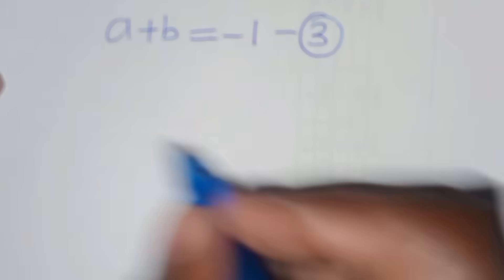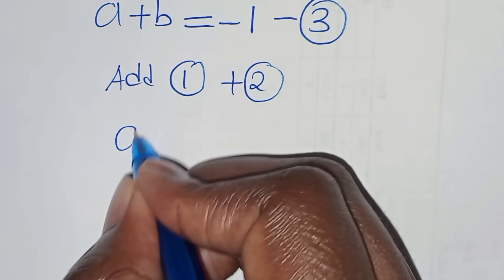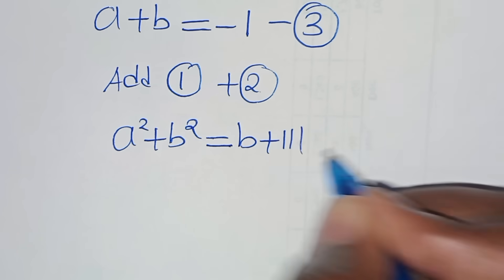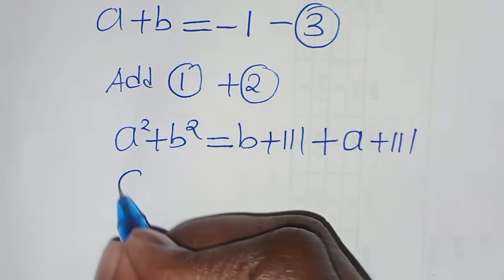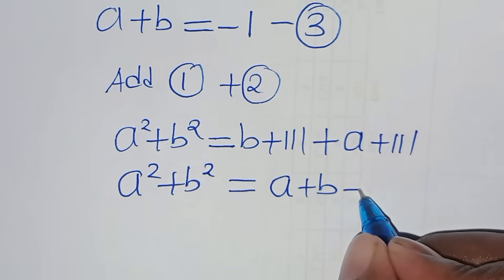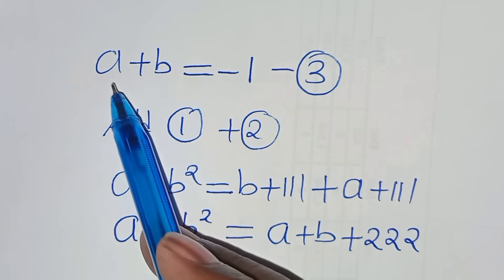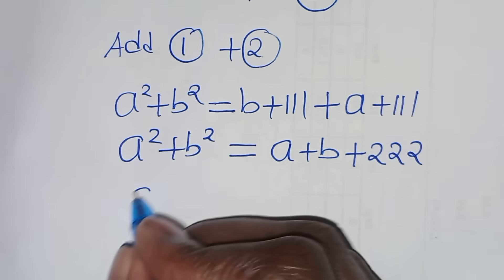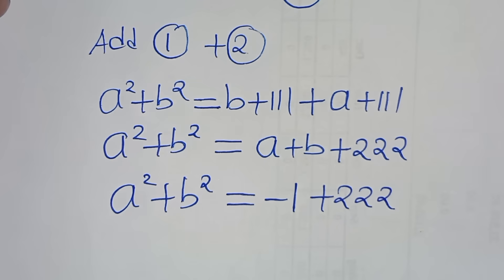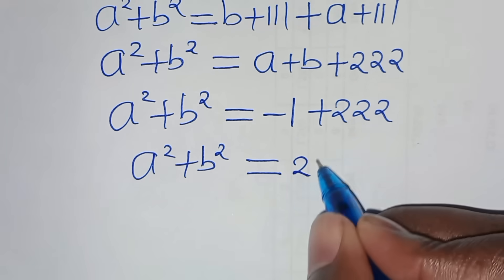The next step is to add equation 1 with equation 2. So we have a squared plus b squared equals b plus 111 plus a plus 111, which gives a squared plus b squared equals a plus b plus 222. Since a plus b equals minus 1 from equation 3, we have a squared plus b squared equals minus 1 plus 222, which equals 221.